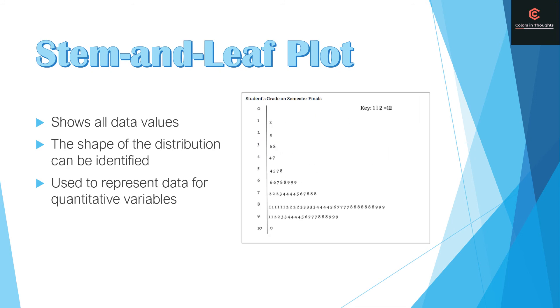Stem and leaf plot. A stem and leaf plot shows all of the data values and the shape of the distribution can be identified on the stem and leaf plot. It is used to represent data for quantitative variables.